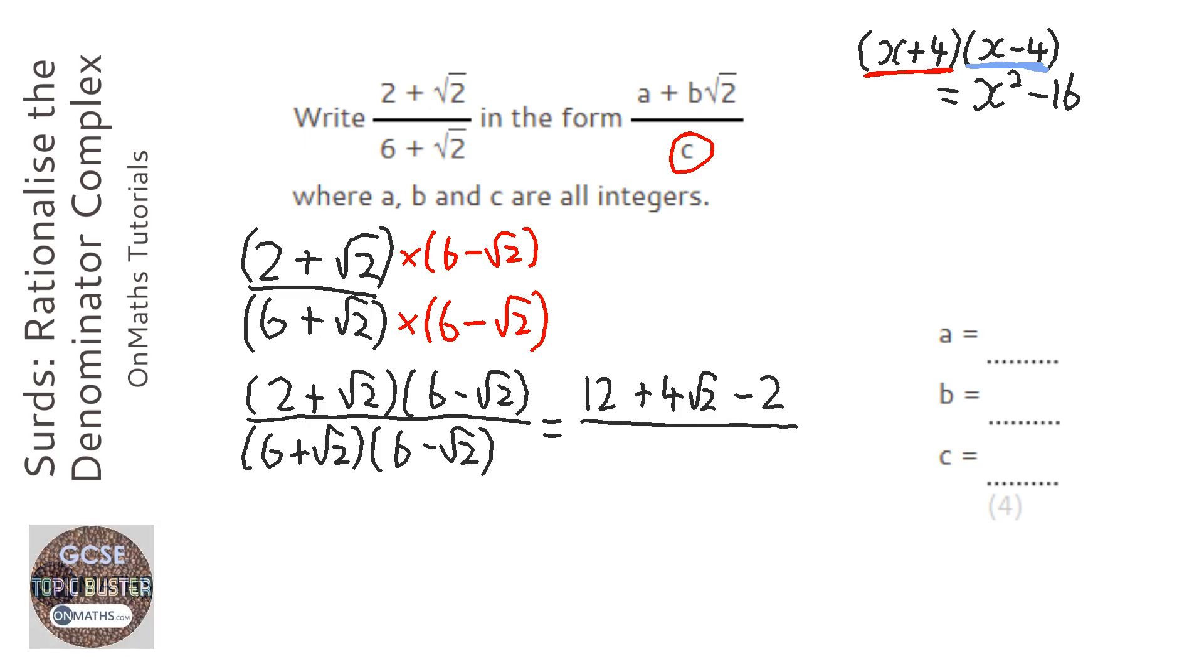And at the bottom we've got 6 times 6 which is 36, we've got 6 root 2 take away 6 root 2 which gets rid of the root twos, and then we've got root 2 times minus root 2 which is just going to be minus 2. So notice there's no surd at the bottom anymore, which is good because that's what we wanted.